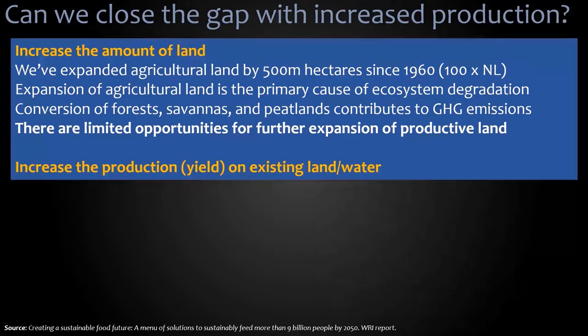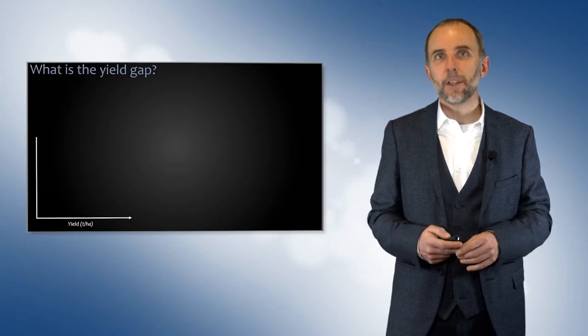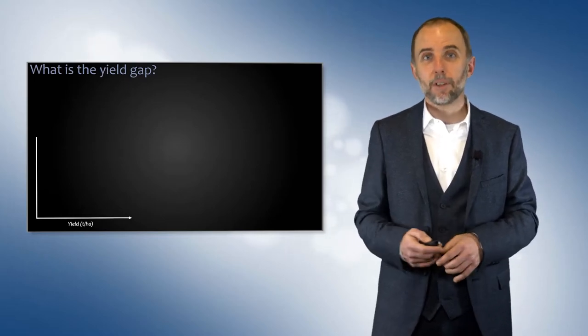The other alternative is to be more efficient — to increase the amount of production on the existing land and water. This is a question of not just production but yield: how much production per unit area, which is tons per hectare in this case.